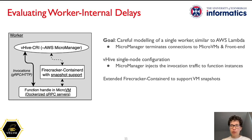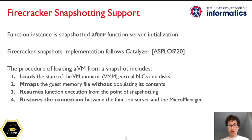Following the setup described in the Firecracker paper, we configured the worker setup in VHive similar to a worker in AWS Lambda. In this setup, the VHive CRI component plays the role of the AWS Lambda micromanager, terminating all connections to components inside and outside of the worker. The micromanager itself injects invocations via gRPC connections to the functions in microVMs. We extended Firecracker ContainerD to support Firecracker snapshots, which provide the lowest cold start delays in the state-of-the-art setting.